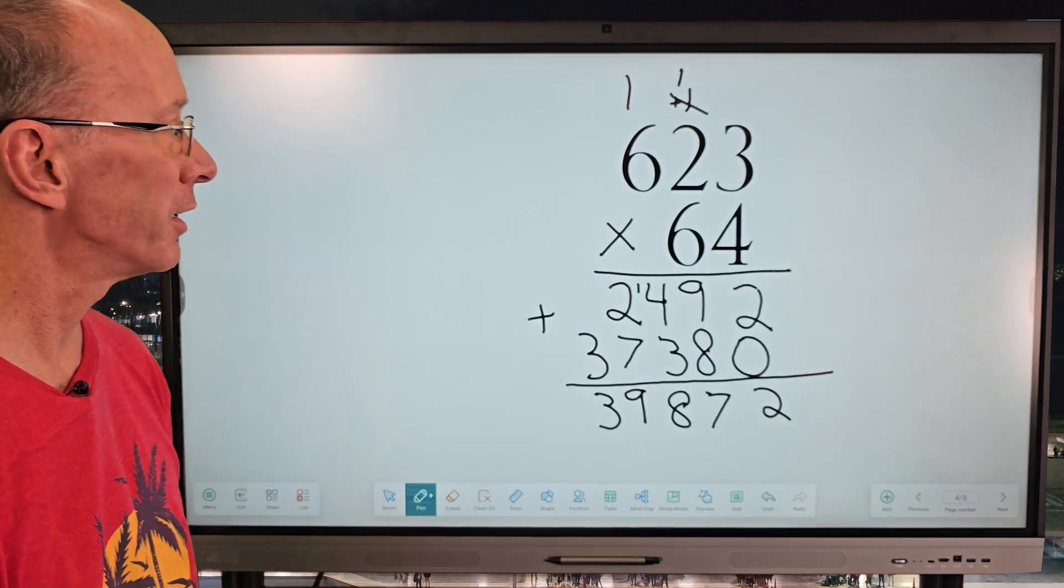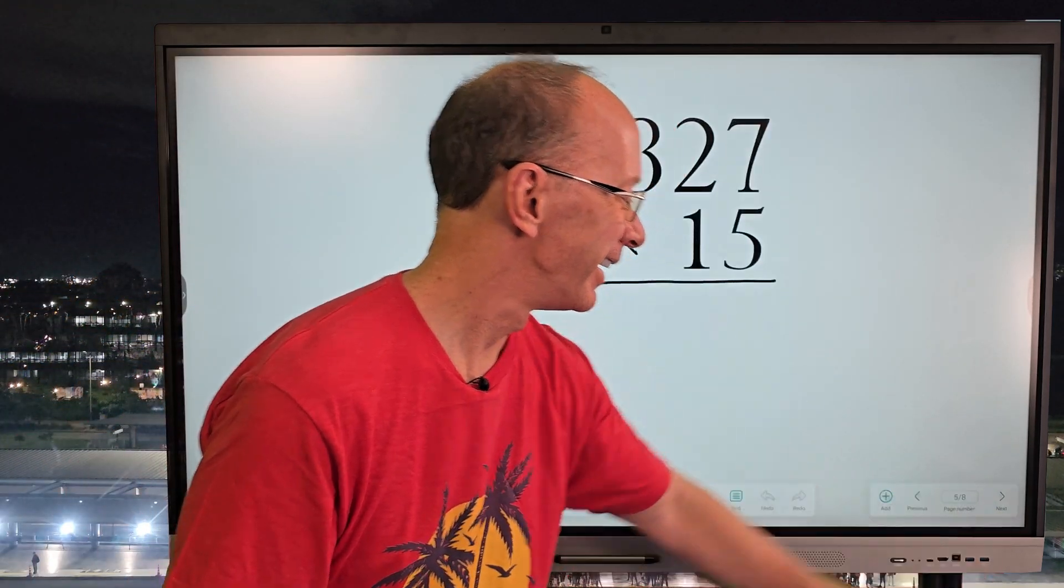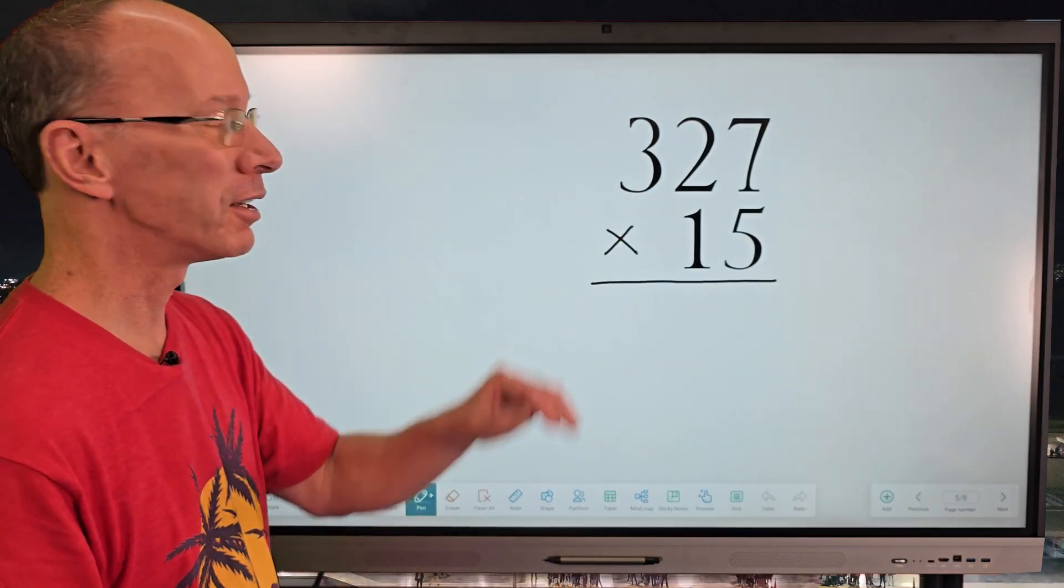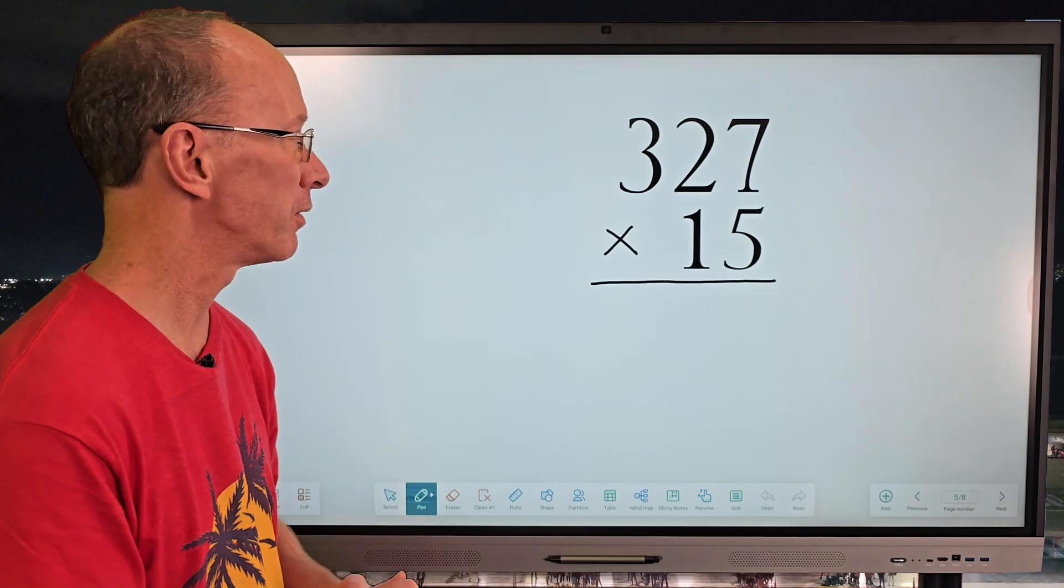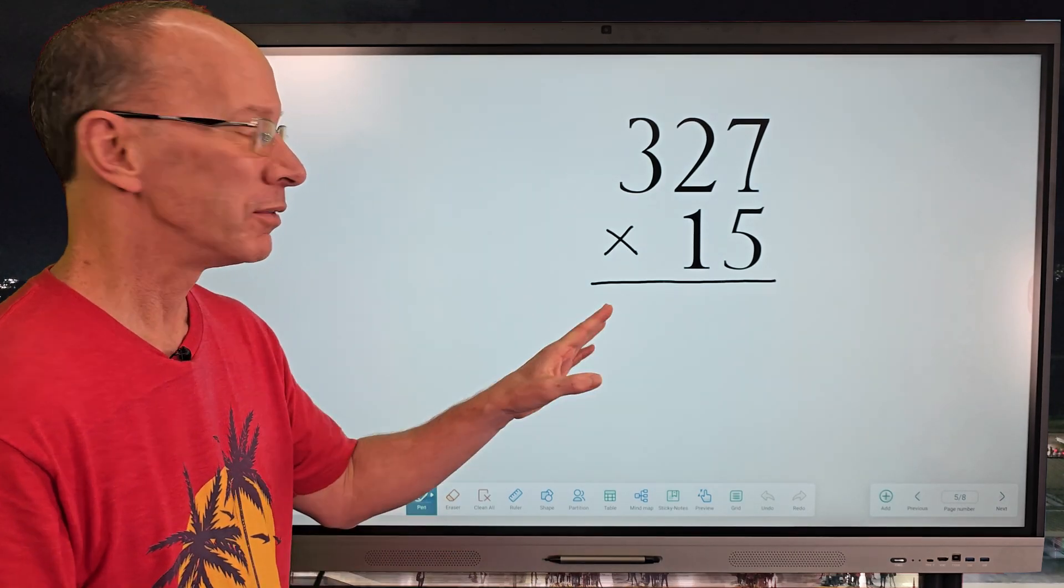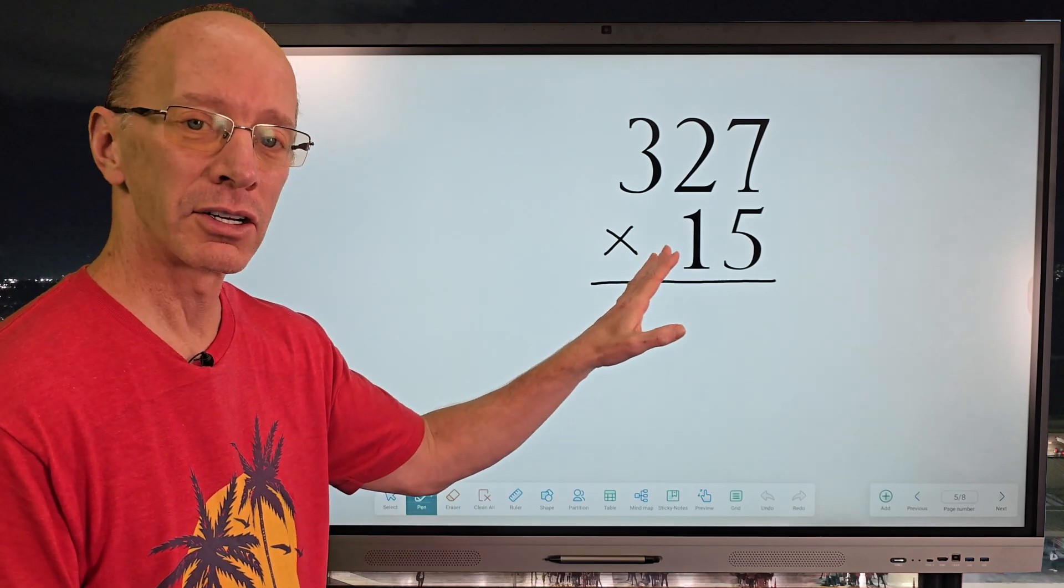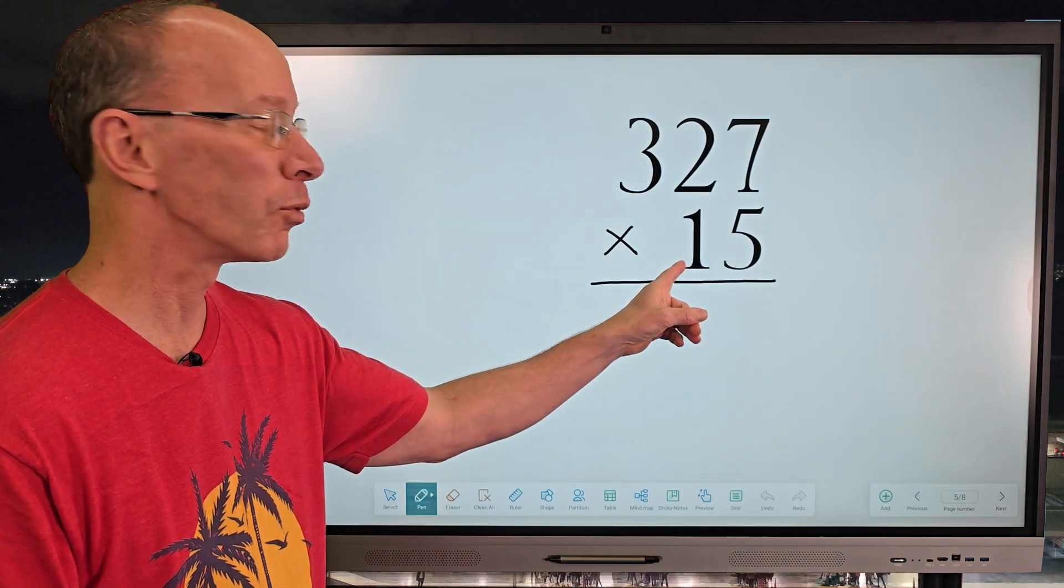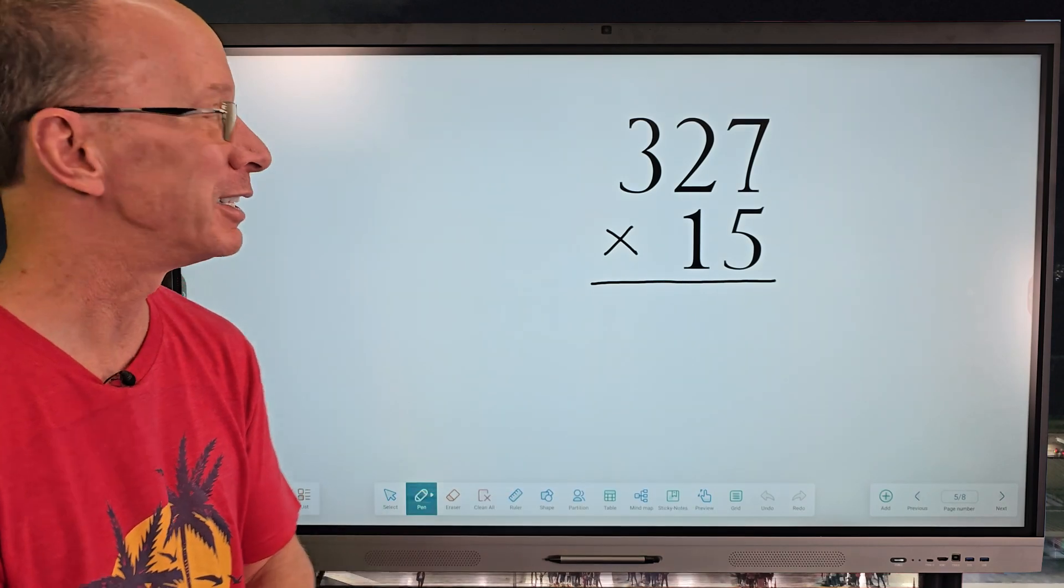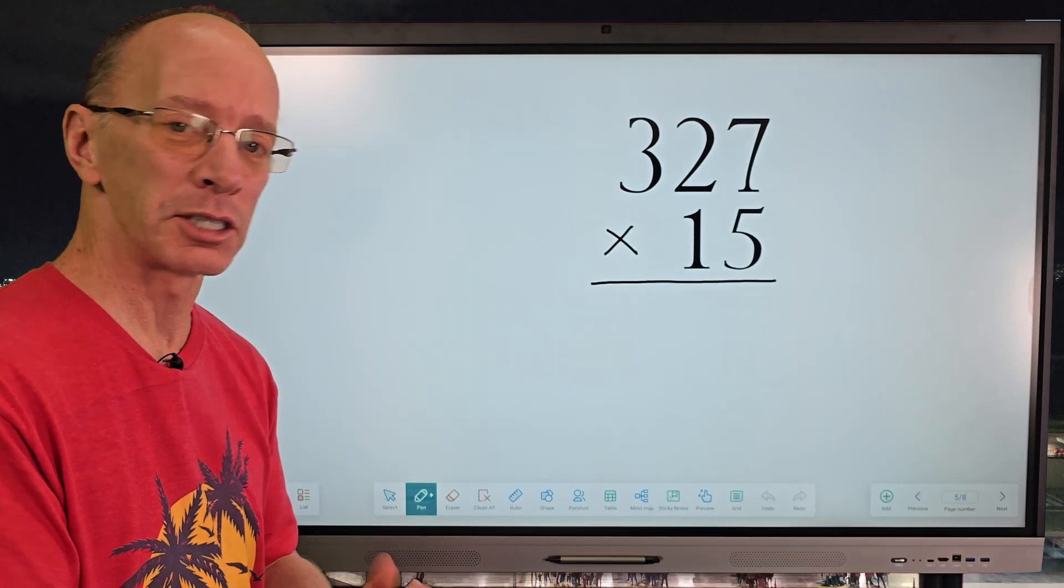Hey, want to try another one? Yeah, let's do it. We have 327 times 15. When I'm looking at that, I love multiplying with 5. So I think it's going to go okay. And then our number right here, 1. Oh my goodness, that'll be an easy one. So, but again, let's just practice together.